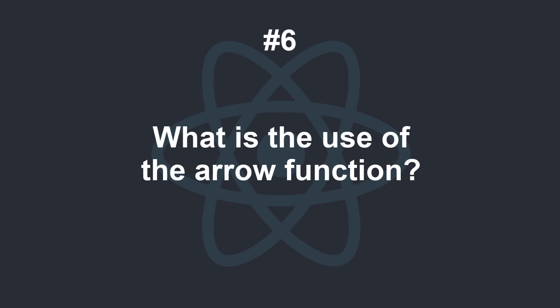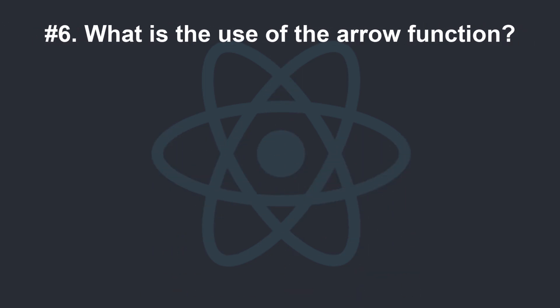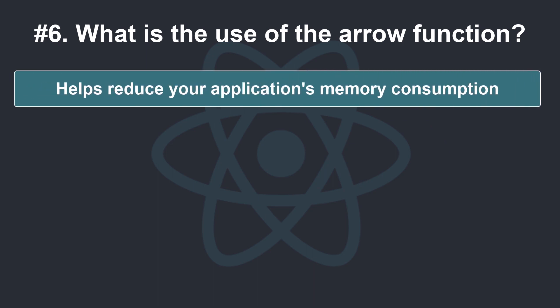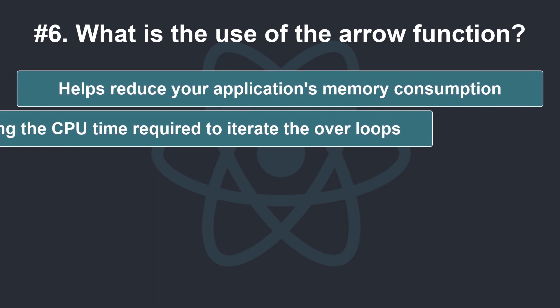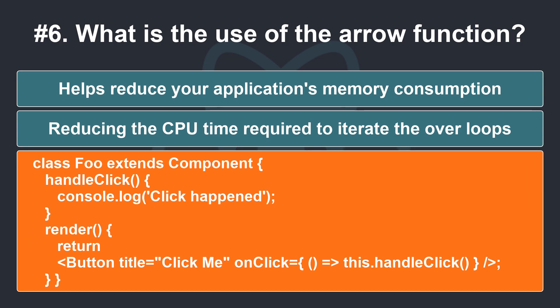What is the use of the Arrow function? The use of arrow functions in React Native is to help reduce your application's memory consumption. It's done by reducing the CPU time required to iterate over loops to generate the components necessary for your lists. Here's an example of an arrow function in Render.